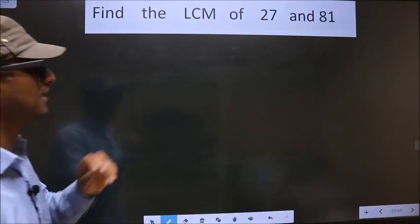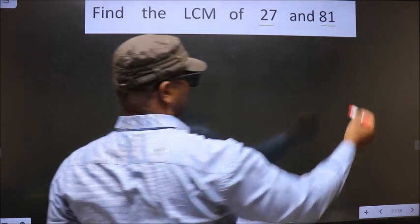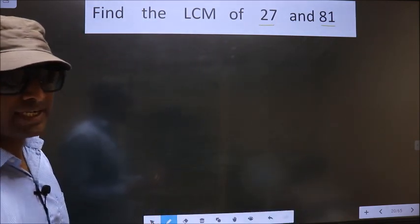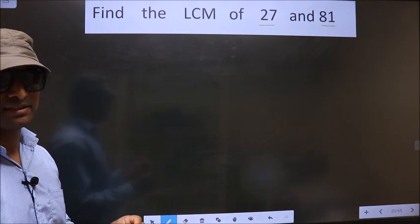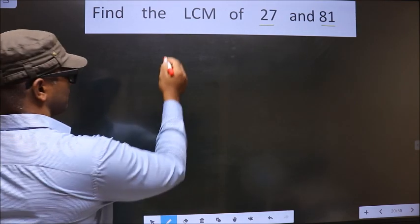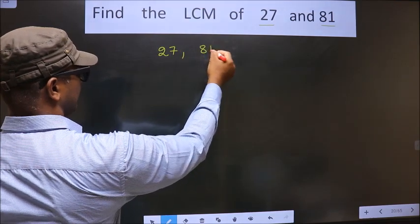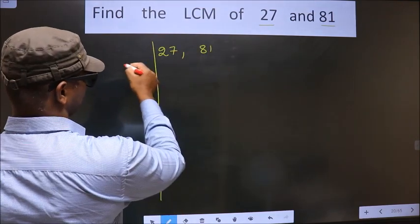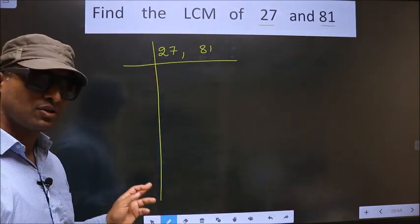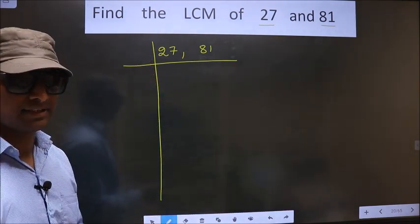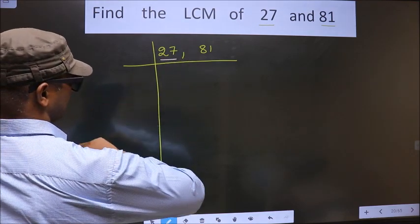Find the LCM of 27 and 81. To find the LCM, first we should frame it in this way — that is 27 and 81. First we focus on the first number, that is 27.